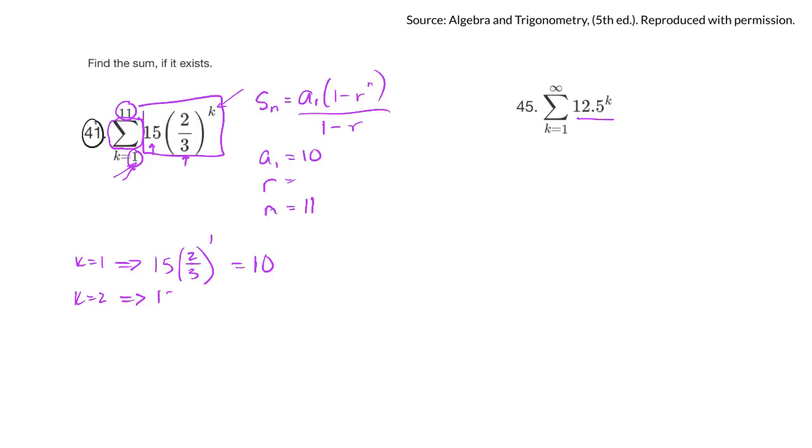So, 15 times (2/3)². (2/3)² would be 15 times 4/9. And if I simplify that, 3 goes into 15 five times, 5 times 4 is 20. So that would be 20/3. That's my second term.